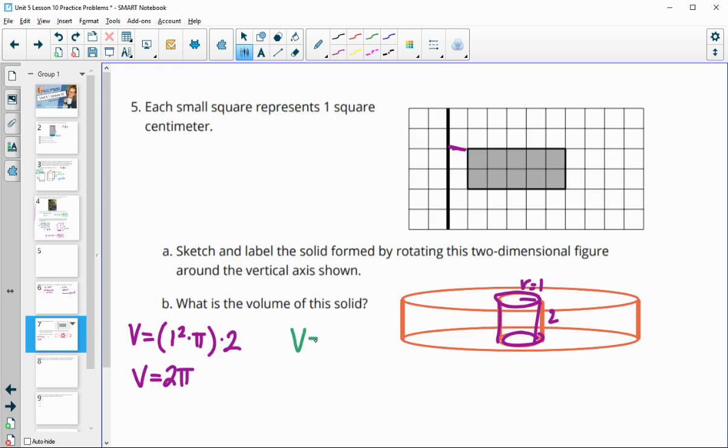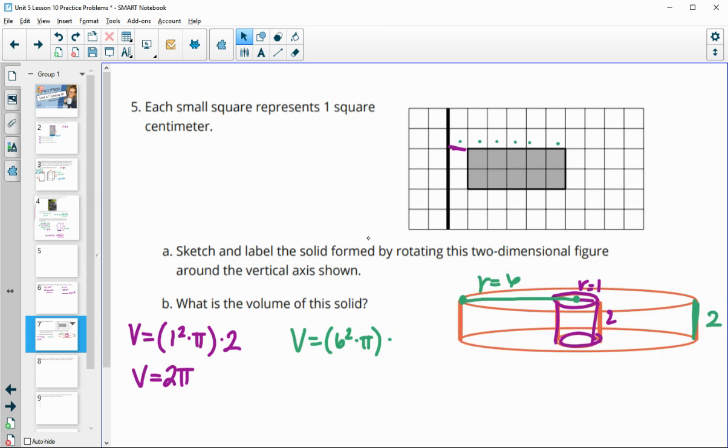Then we would want to find the volume of the larger cylinder. Now going all the way into the middle here, that's going to be 1, 2, 3, 4, 5, 6 for the radius. So the area of this base is 6 squared times pi, and then we multiply by the height, which is still 2. So we'll do 6 squared pi times 2. This is 36 times 2, which is 72 pi for the volume of that larger cylinder. Then we would just subtract that inner volume. That gives us our total volume of 70 pi centimeters cubed.